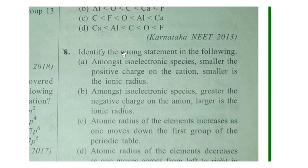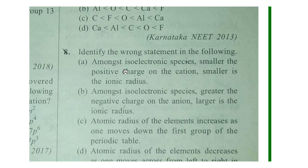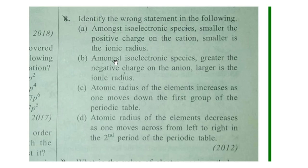Question 8: Identify the incorrect statement. Among isoelectronic species — same concept as before — the larger the cation charge, the smaller the ionic radius. This statement is correct. Remember: if an element has more positive charge, it is very small; if it has more negative charge, it has a very large size. That is the key concept for isoelectronic species.